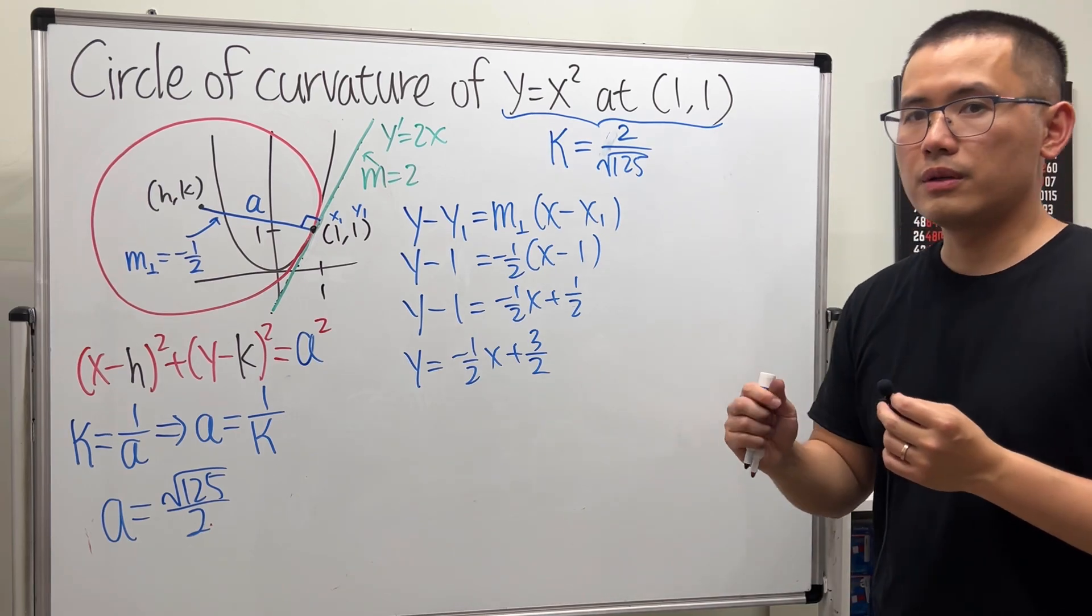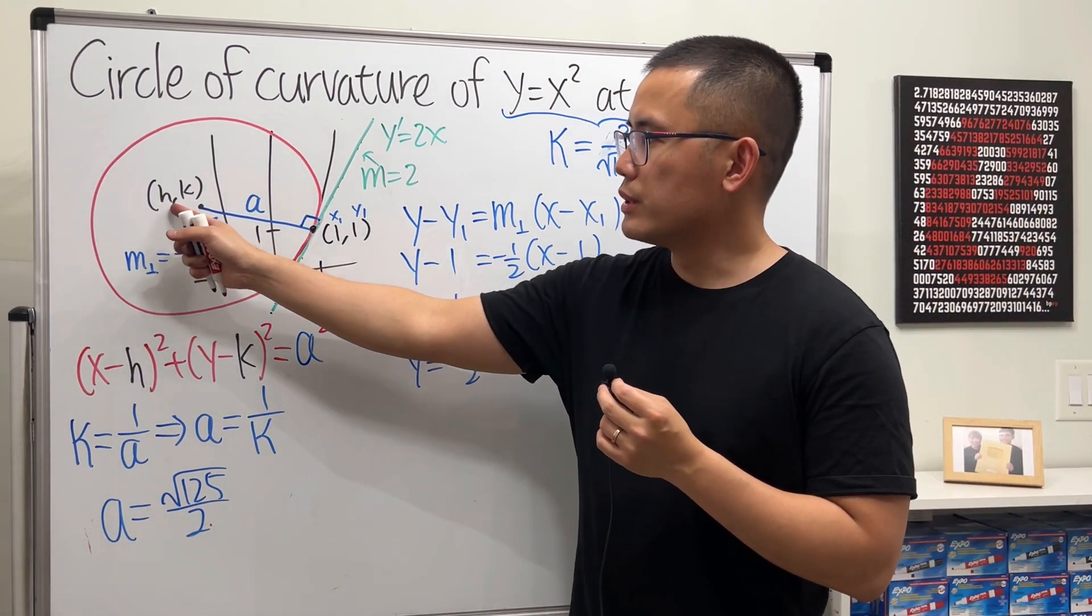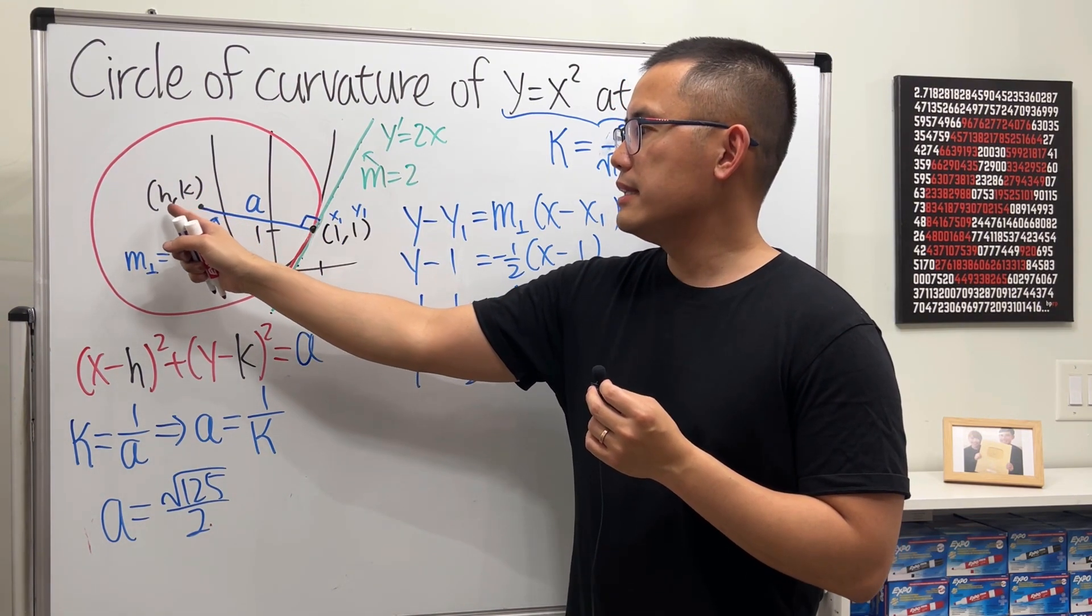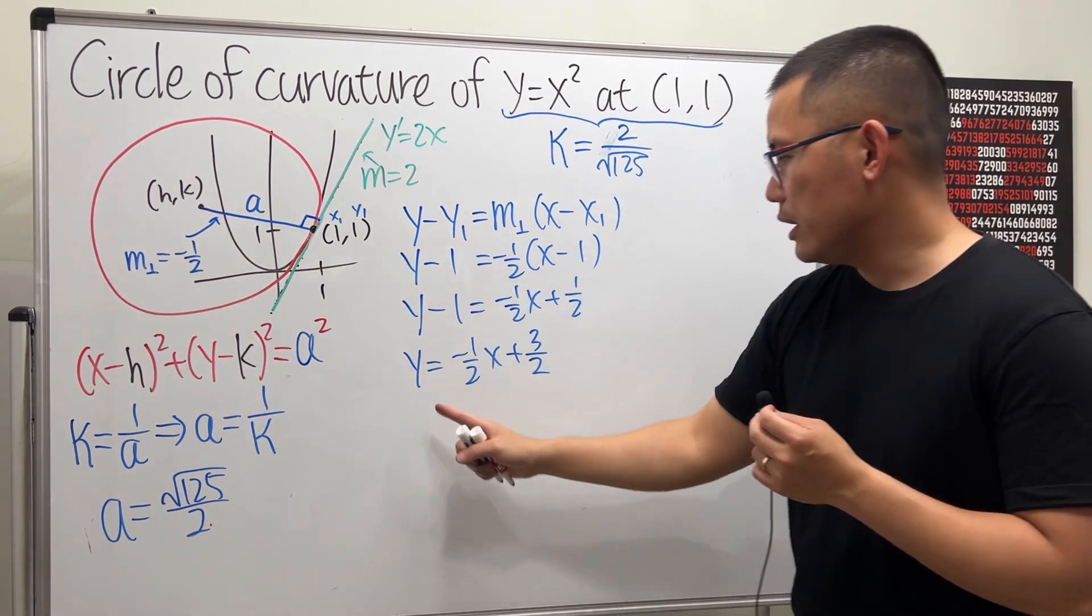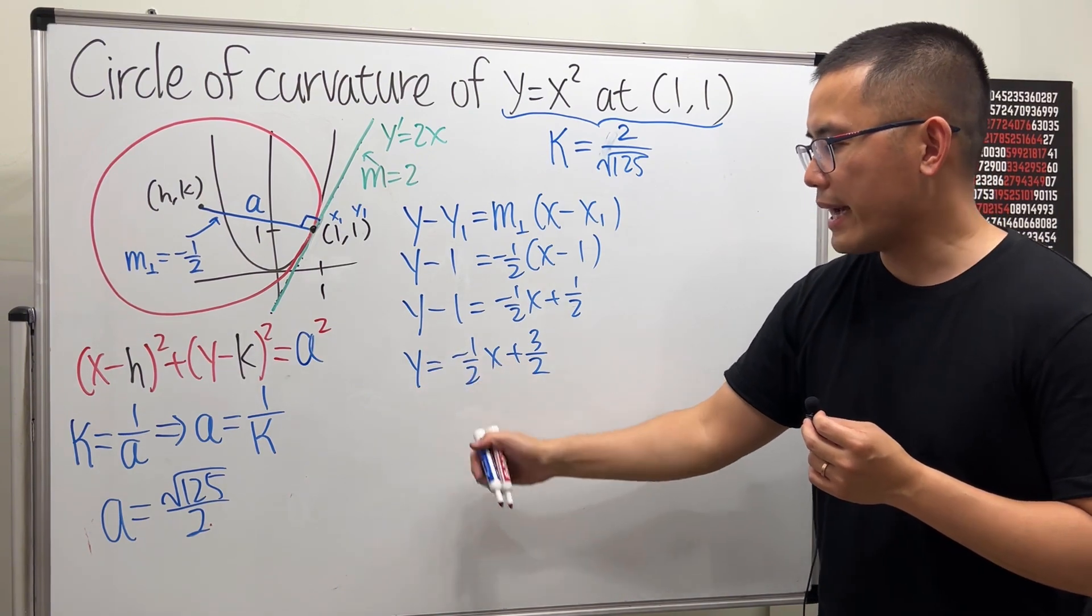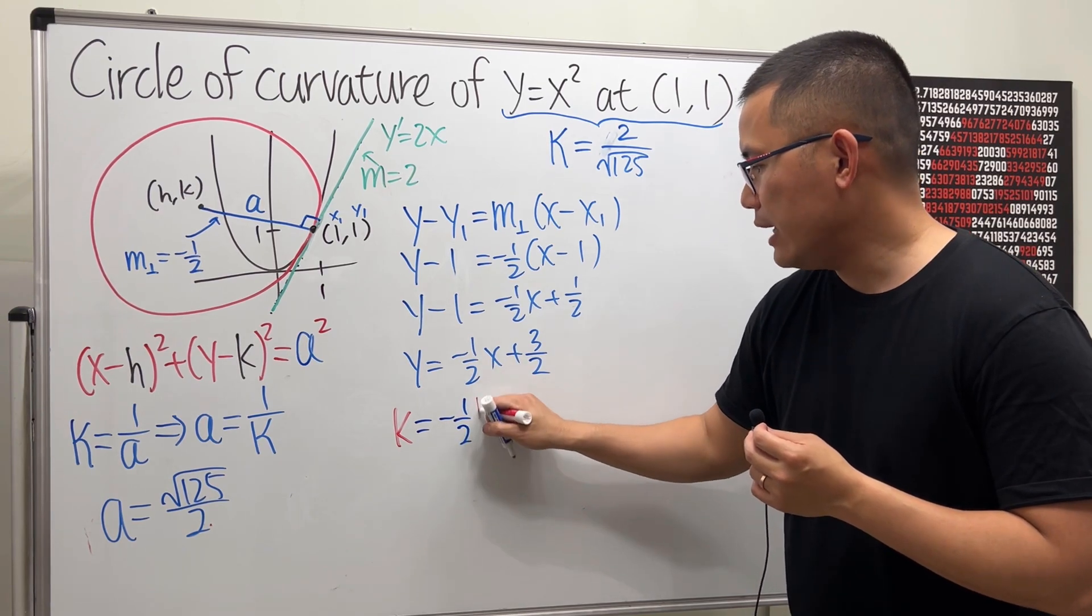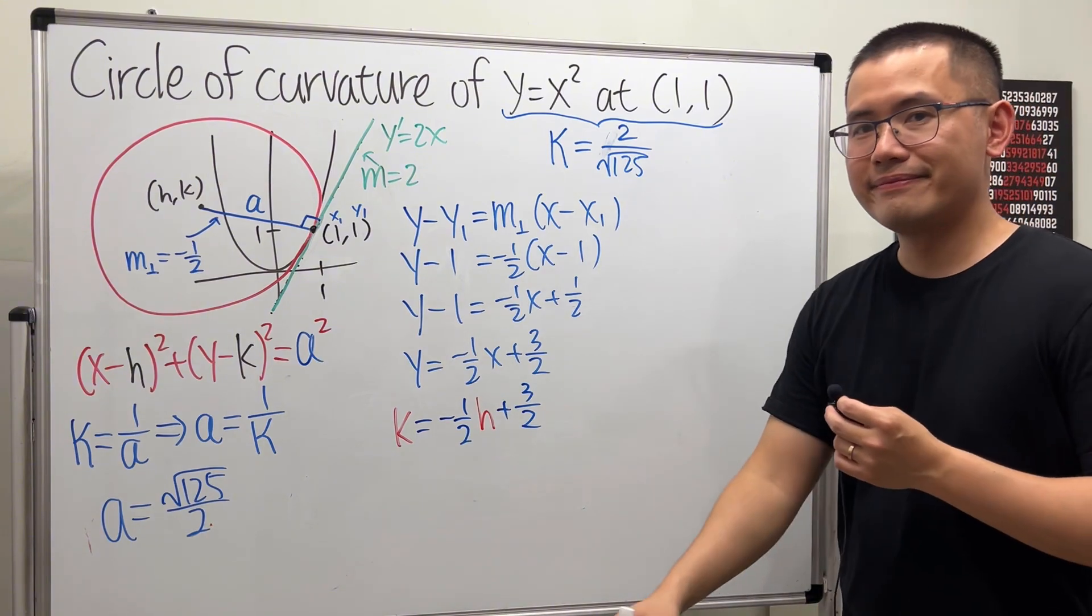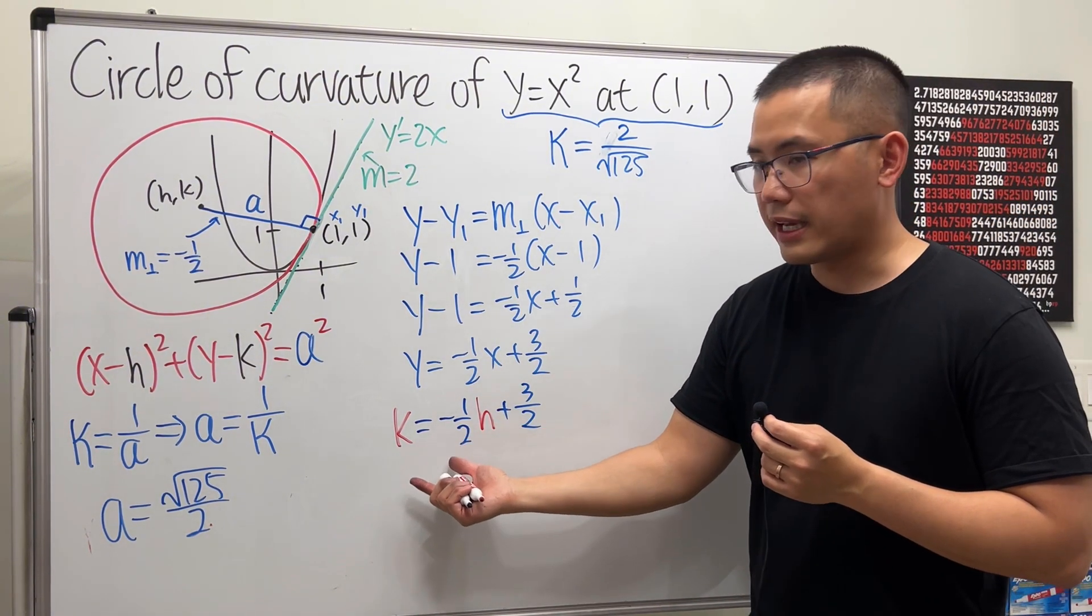Now how can we use it though? Our goal is to get a connection between h and k. Since h and k lies on this line, we can put h and k into here and here, h for x and k for y. So we get k equals negative 1/2 h plus 3/2. So this is the connection between h and k.